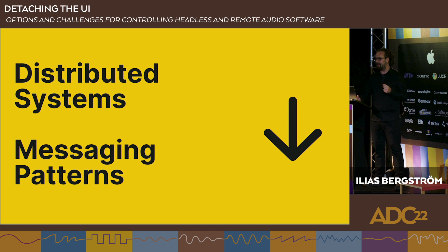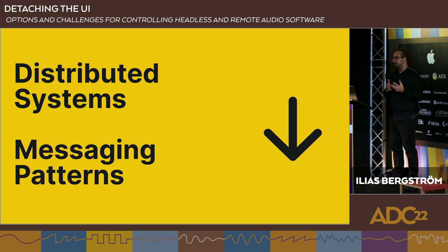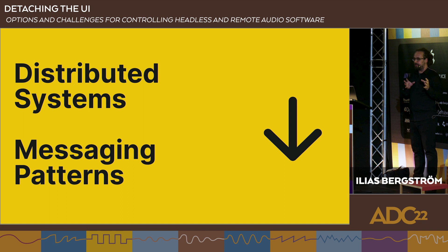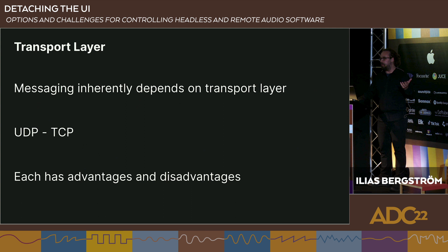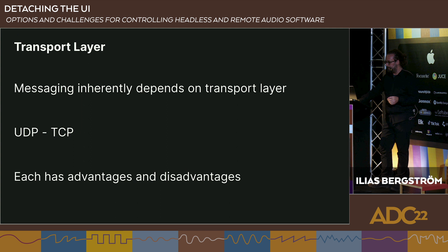Moving on to distributed systems: pretty much all digital modern musical instruments can be seen as distributed computing systems. A distributed system is a collection of networked computers which communicate using some sort of message passing. I'll go through just the basic three patterns. First, what all this messaging happens on: the transport layer. Because all messaging depends on it, the main two choices are UDP and TCP, each with its own advantages and disadvantages.